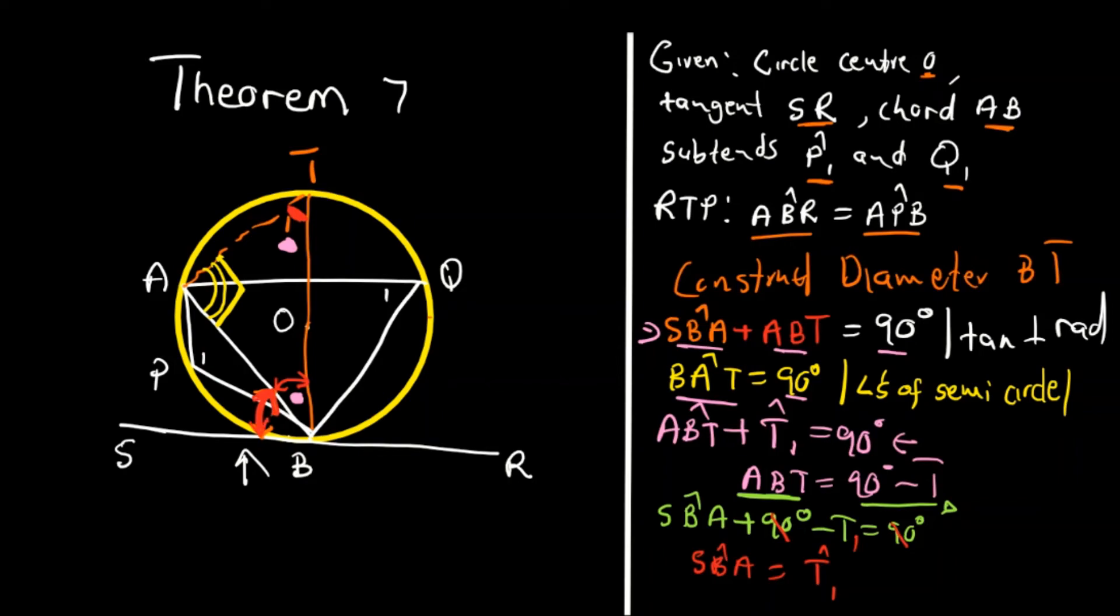And another thing that you need to note is the angle T1 is equal to angle Q1. The reason for that is angles on same segment. So it's equal to this angle here. This angle equals this angle here. So it's angles on the same segment.